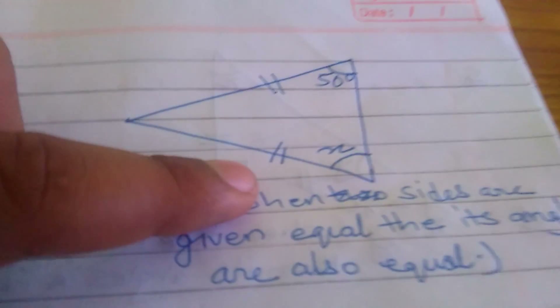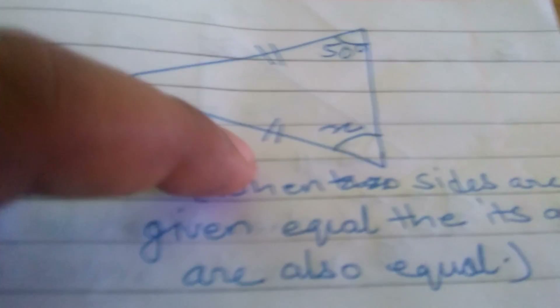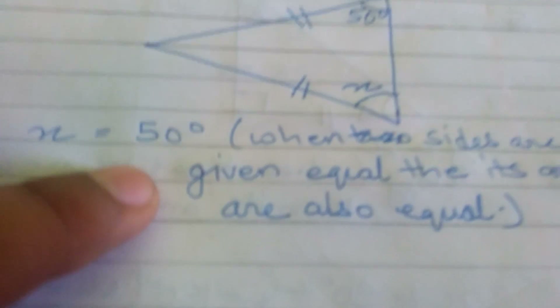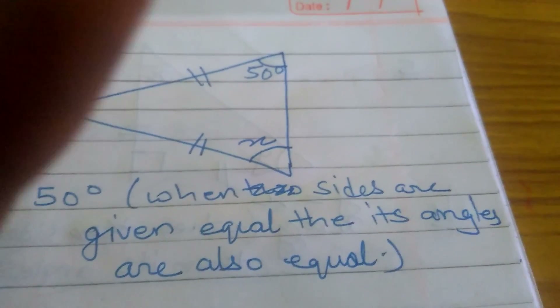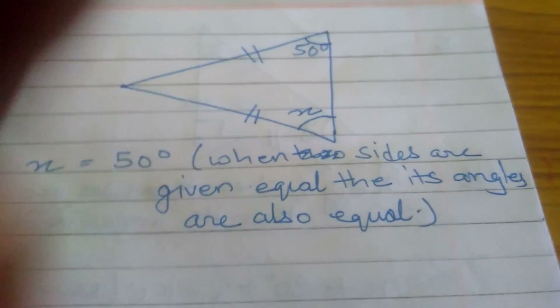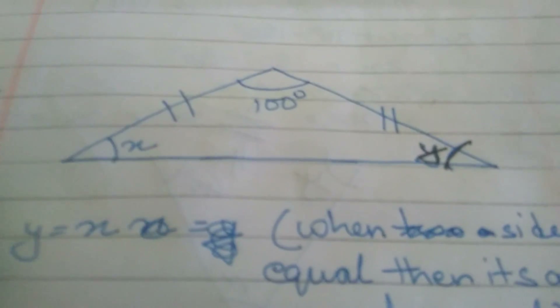The third figure: we have to find X in it, and these two lines are given equal. X is equal to 50, because when two sides are given equal, their angles are also equal.